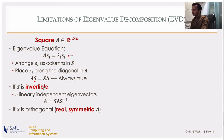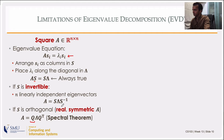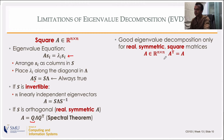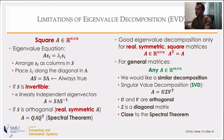Eigenvalue decomposition works especially well for real symmetric matrices because we are guaranteed orthogonal eigenvectors. With an orthonormal matrix Q, its inverse is just Q transpose, giving us A = QΛQ^T — the spectral theorem. So eigenvalue decomposition requires A to be square, real, and symmetric. For a general matrix with m rows and n columns, we would like a similar decomposition.